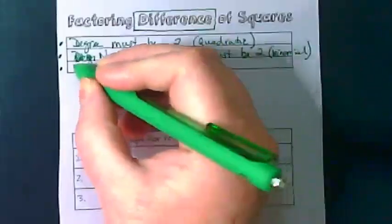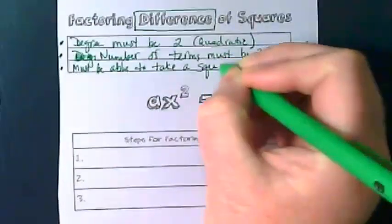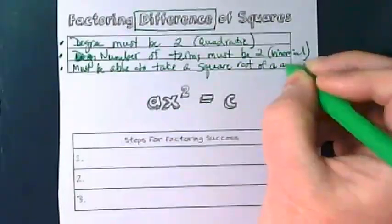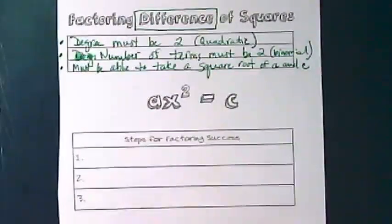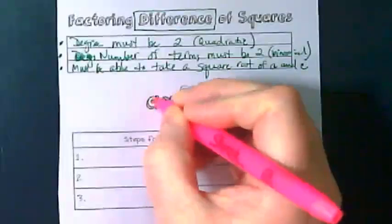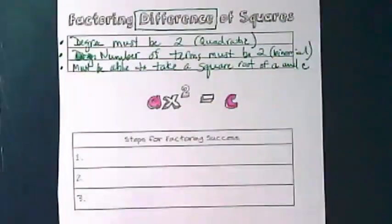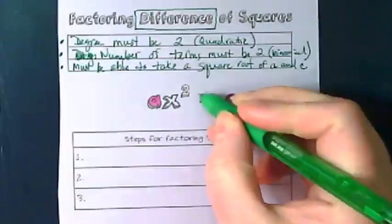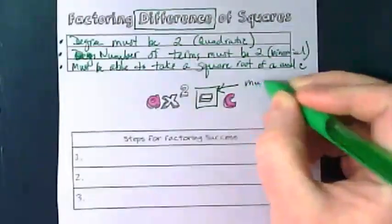Third, we must be able to take a square root. Whatever is in each position must be something we can pull a square out of. Fourth, the symbol must be a minus sign.